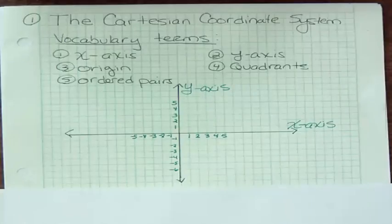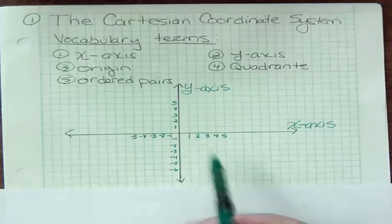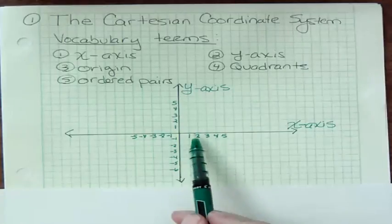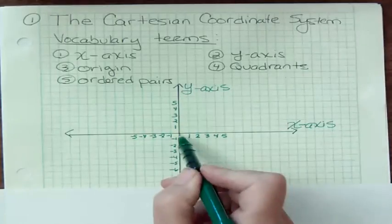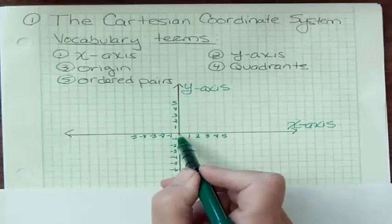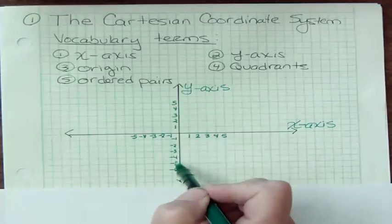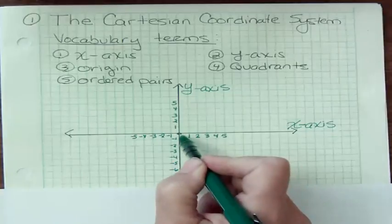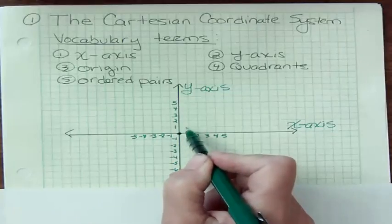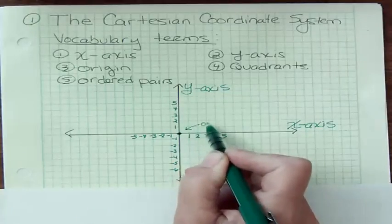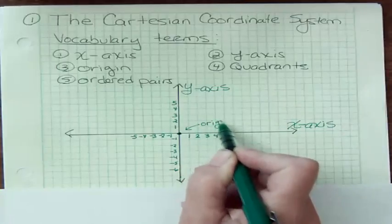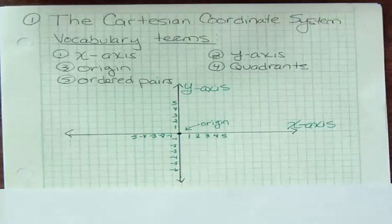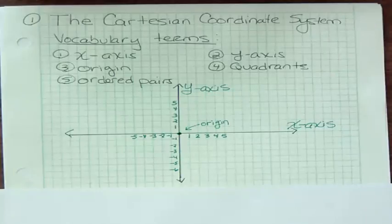But what about the origin? Well, if you look at the number lines that we're looking at, the vertical and the horizontal, they meet right here. And that's the zero point. It's zero for the x-axis and for the y-axis. So that is the origin. The origin is the zero point for both of the axes. And when we get ready to plot points or name points or whatever, we always want to be aware of the origin in order to do that correctly.